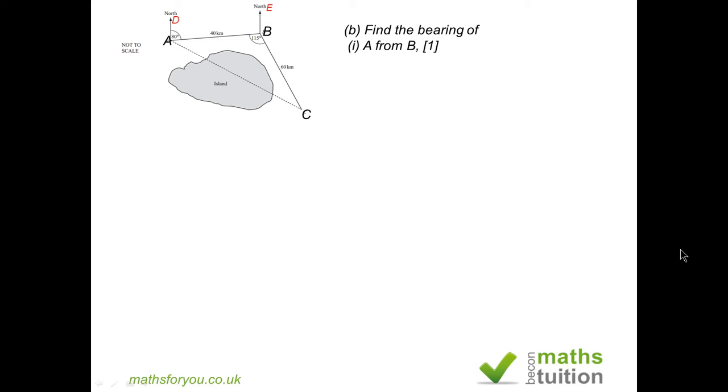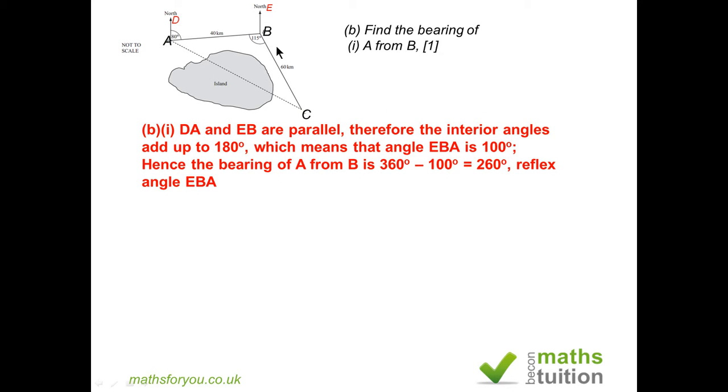Because AD and BE are parallel, the interior angles add up to 180 degrees. Therefore, the obtuse angle EBA is 100 degrees. To find the reflex angle EBA, we need to subtract 100 from 360 because the angles at the point add to 360 degrees. So EBA is 260 degrees.